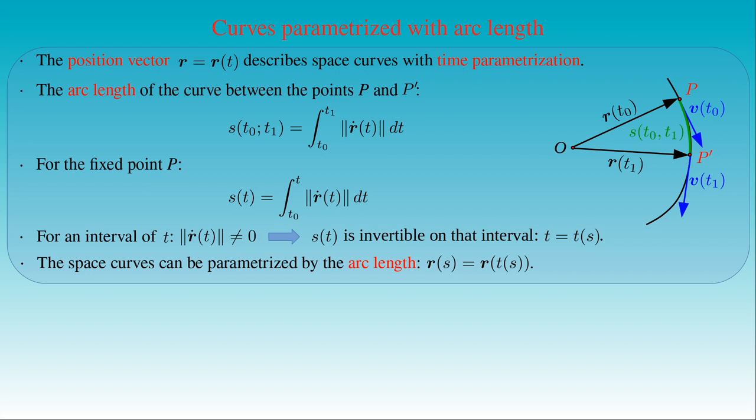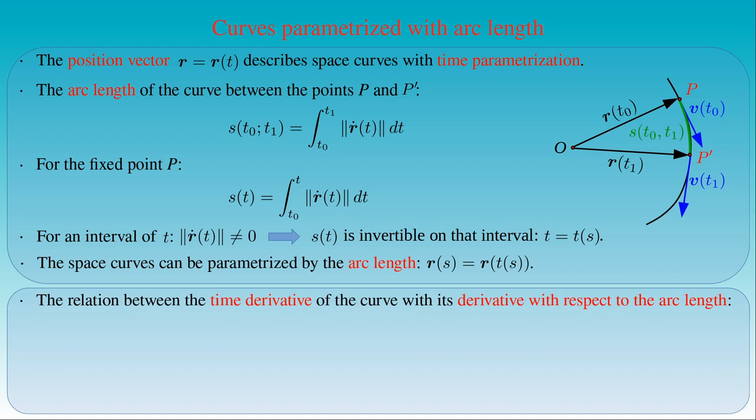As a result, we can establish the relation between the derivative of the curve with respect to the time parameter t and its derivative with respect to the arc length s. r-dot is the derivative of the position vector with respect to the time parameter t. For this derivative we can apply the chain rule, by writing it as the derivative of the position vector r with respect to the arc length s, times the derivative of the arc length s with respect to the time t.